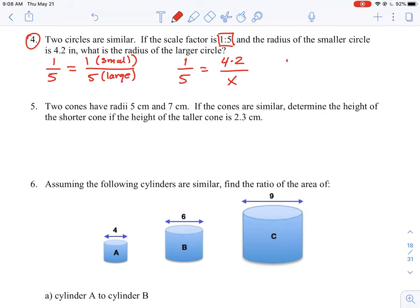We cross multiply, bring x to the top, take the 5 to the top and multiply that by 4.2. This ends up being 21 inches.